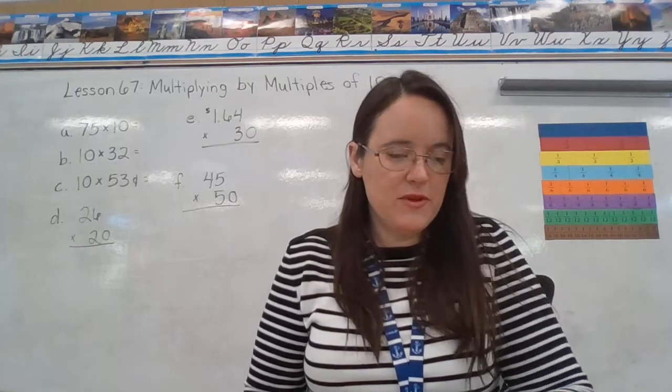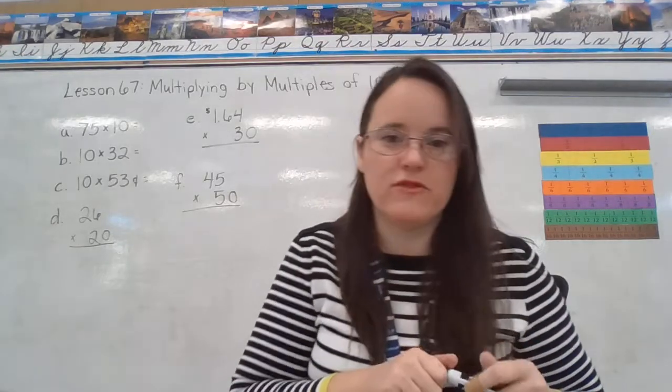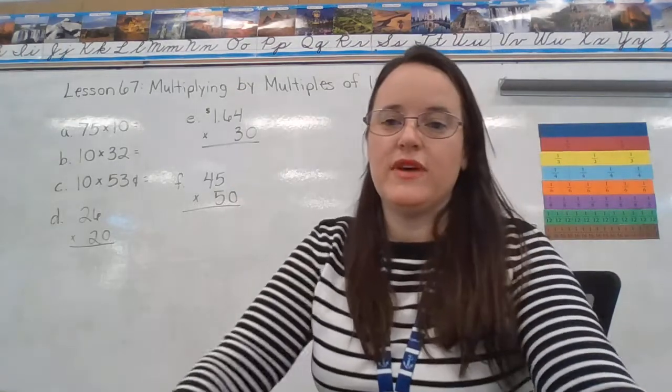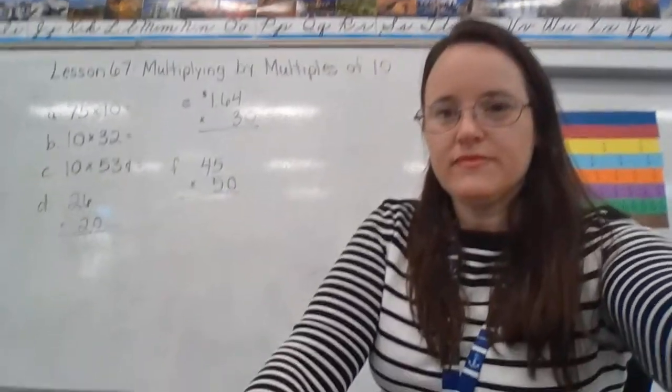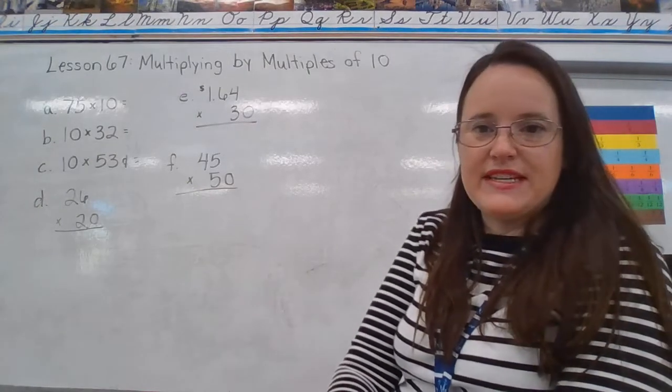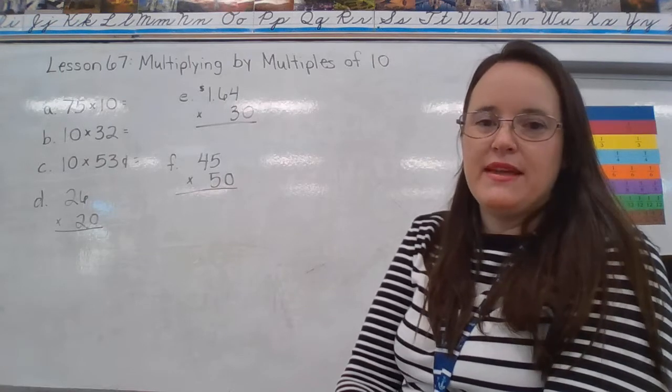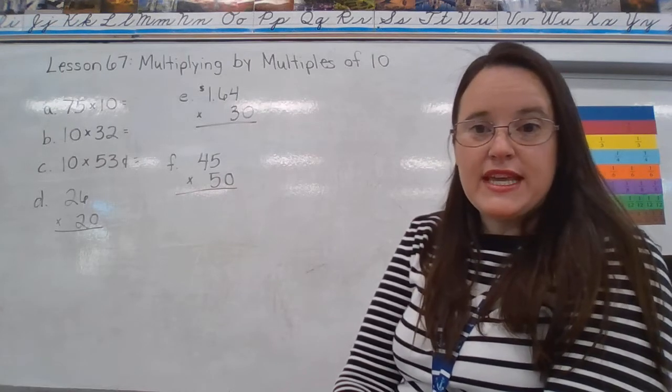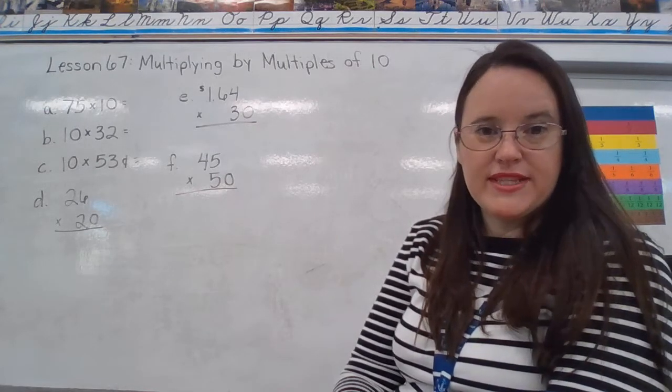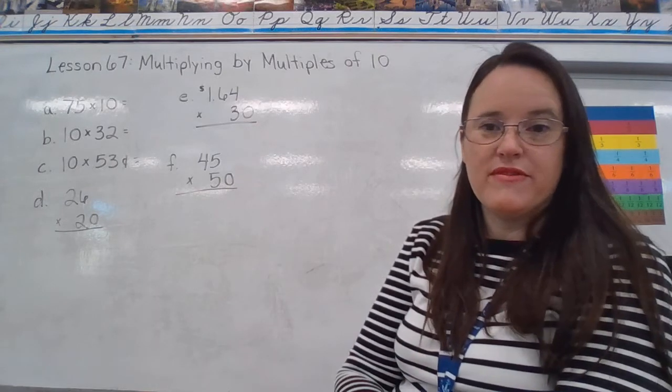Alright, ladies and gentlemen, we're going to get some more practice with this by doing our lesson practice problems. These are on page 431, if you'd like to follow along in the book. Otherwise, I do have them on the board behind me. Looks like A has a little bit of a glare on it. It says 75 times 10. If you can't read that, A is 75 times 10. So, right now, I'd like you to hit pause. Work on these on either a whiteboard or a piece of paper at home by yourself. When you have answered them all, hit play again, and we will go over the answers together.